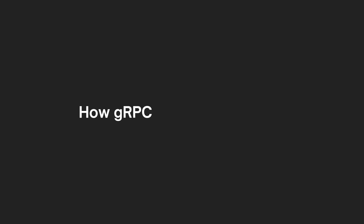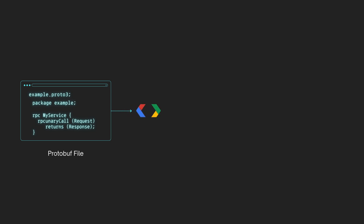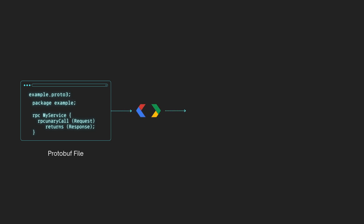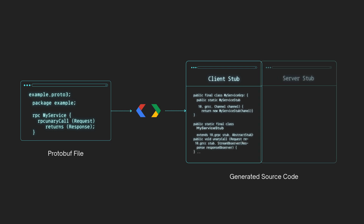Now that you know what gRPC is and why it's so powerful, let's break down what really happens under the hood when a gRPC call is made. It all starts with a .proto file where the service methods and data types are defined. Next, gRPC generates client and server code called stubs in your language of choice, like Java, Python, or Go.